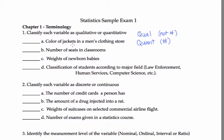Color of jackets in a men's clothing store. Not a number, so that's a quality. Qualitative. Number of seats in a classroom. That's a number. How many, how much, so quantitative.